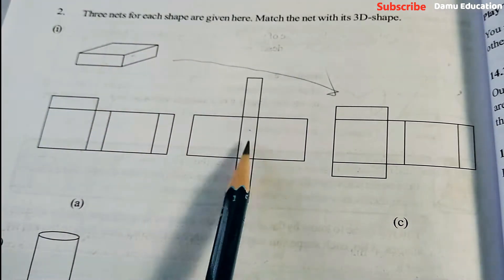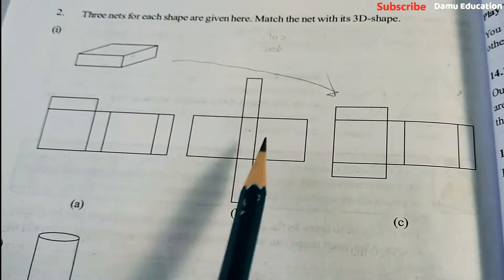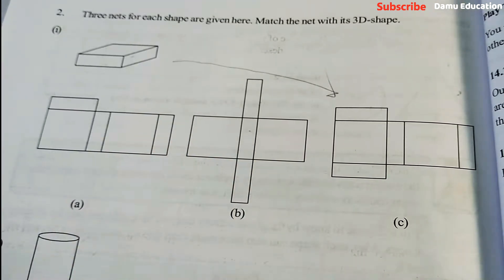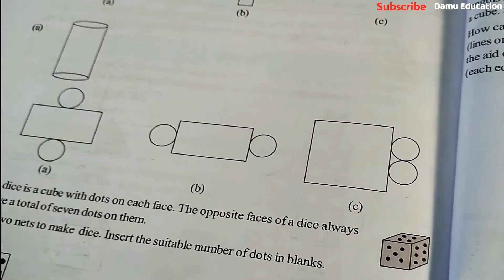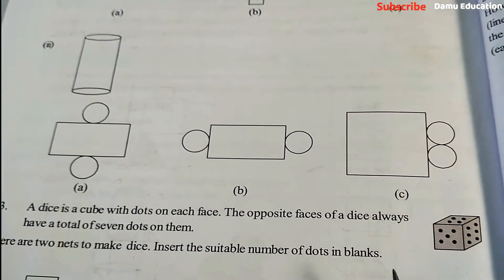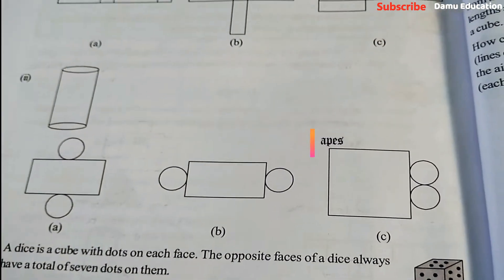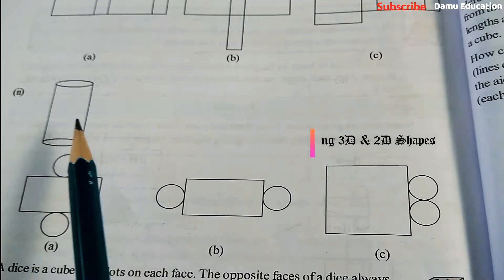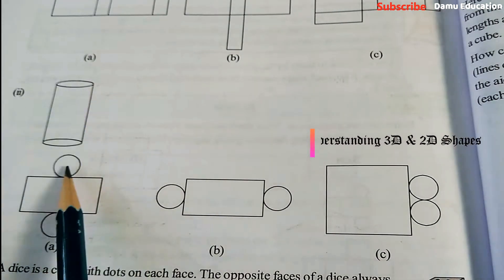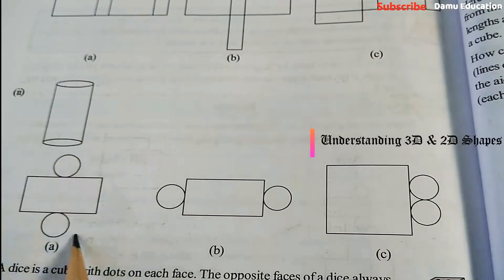Second one, they are given a cylinder. So that cylinder should be here. If you cut and open it, top and bottom surfaces are there in circular shape, so it will come as this.